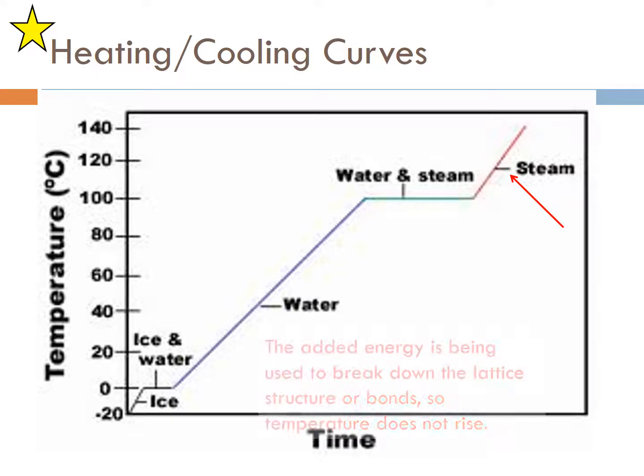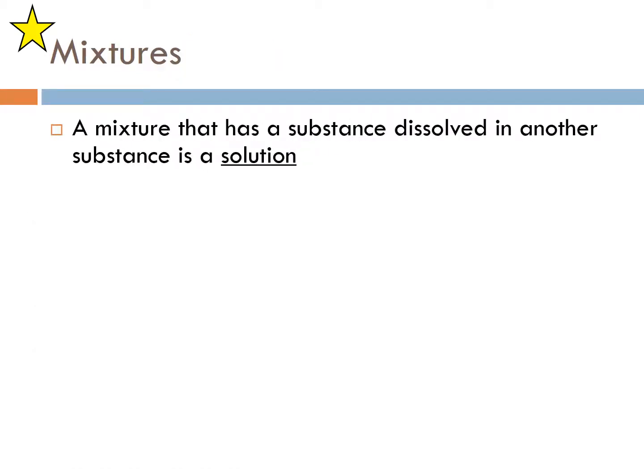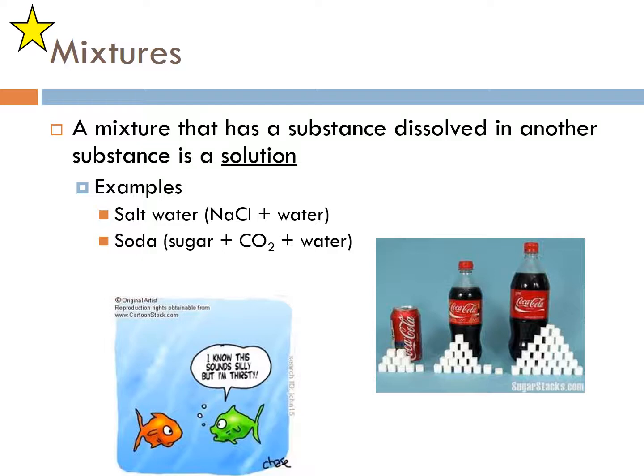Mixtures: if you have a mixture that has a substance dissolved in another, it's a solution. Like Gatorade, Kool-Aid, those are all types of solutions, salt water. Some other examples: NaCl in water, salt water, soda, sugar, carbon dioxide and water. Even though carbon dioxide is a gas, it's dissolved in water, that's why it's carbonated.